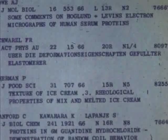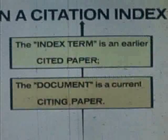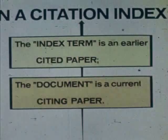Whenever I discuss the Science Citation Index, I am inevitably asked, how can one search by subject? The citation index is indeed a subject index, but it does not employ the symbols used in traditional indexes. In the citation index, the symbols used for subjects are citations. The index term is an earlier cited paper, and the document retrieved is the current citing paper.